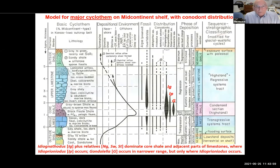This is the model for major cyclothems on the mid-continent shelf with conodont distribution. On the right-hand side I show the source of the sea level curve. The paleosol at the base is marked in orange, and the paleosol at the top is also marked in orange. We have a flooding surface, the transgressive systems tract — usually shale overlaid by a distinctive limestone. The condensed section, the offshore shale, is high stand, shown in lavender. Above that is the regressive limestone, followed in some places by prodeltaic penetration with the exposure surface at the top.